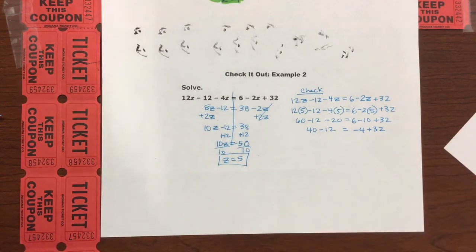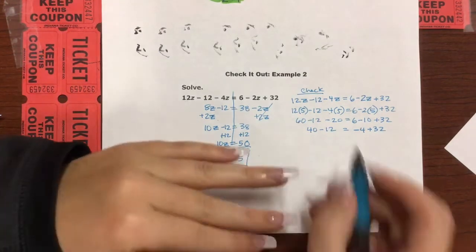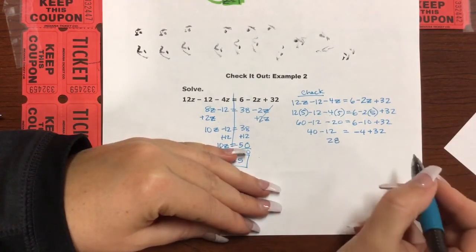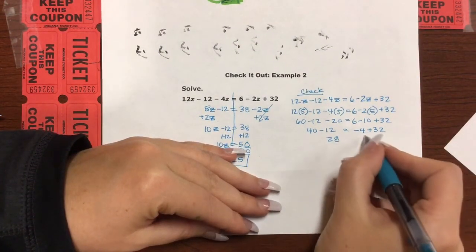Okay, then we got 40 minus 12. Okay, I'm going to say that's 28. Right? Yeah, that's 28. And then this, take away 4 from that would be 28.